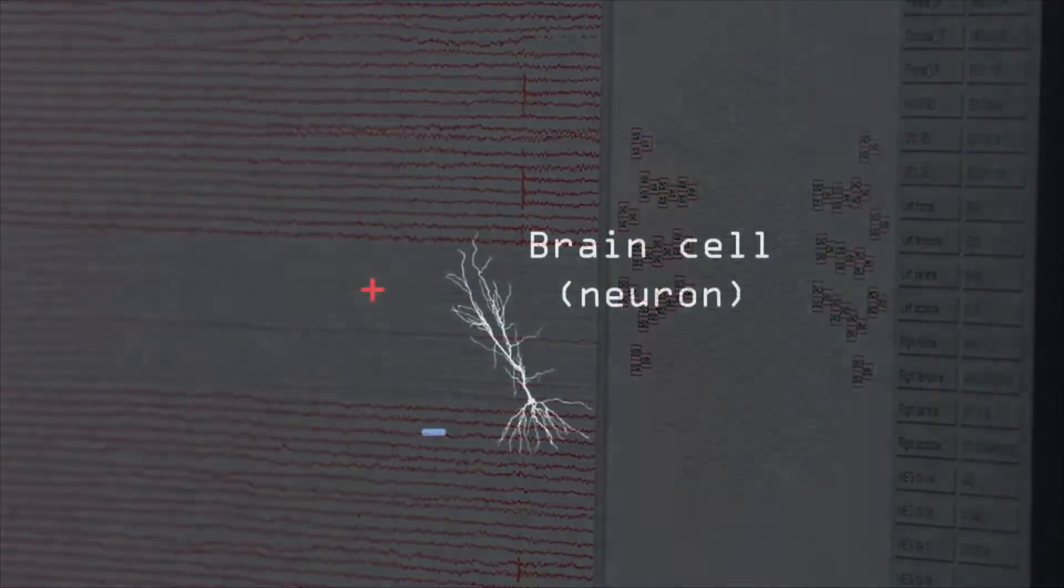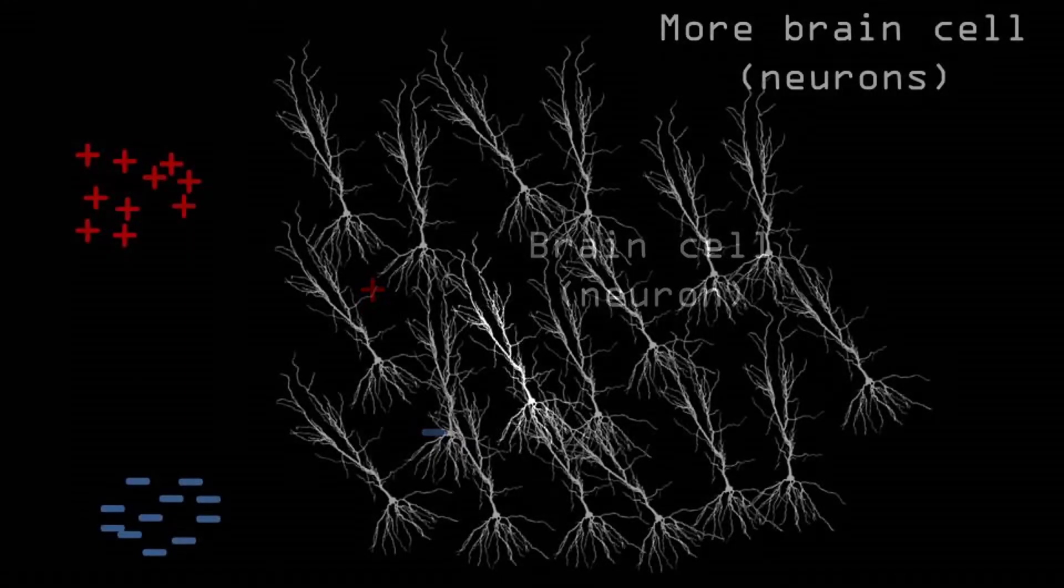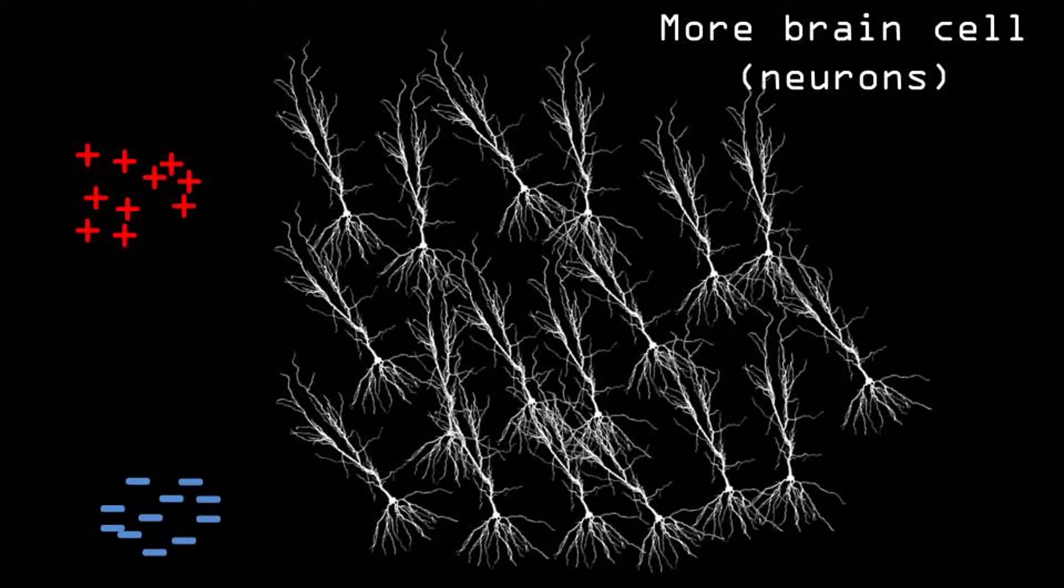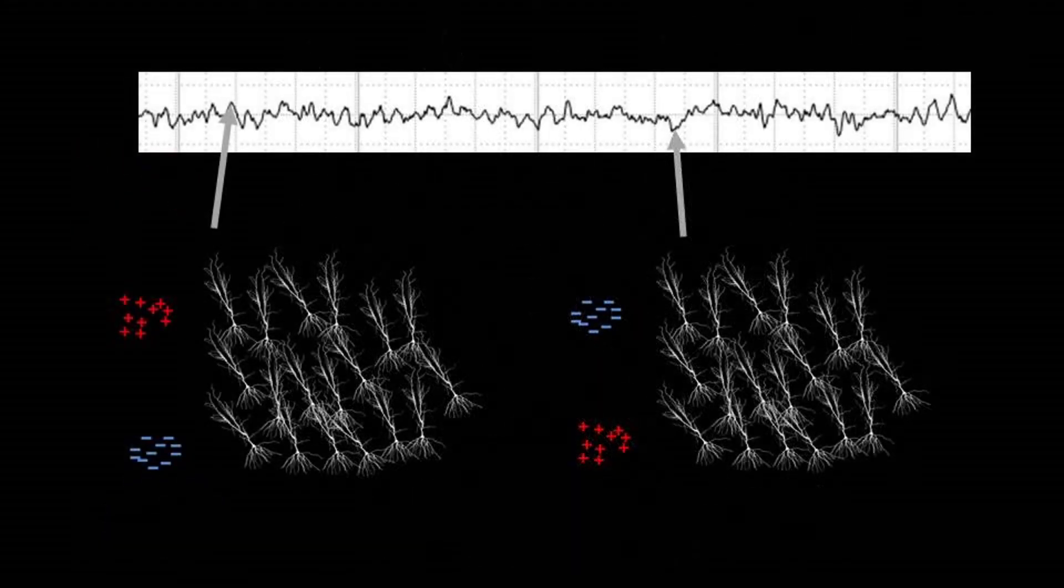When a neuron sends an action potential, there is an influx and outflux of charged particles, resulting in a positively and negatively charged pole. When a group of neurons is active in synchrony, this charge can be picked up as a signal on the head with EEG sensors.